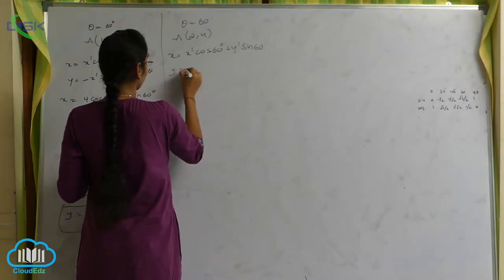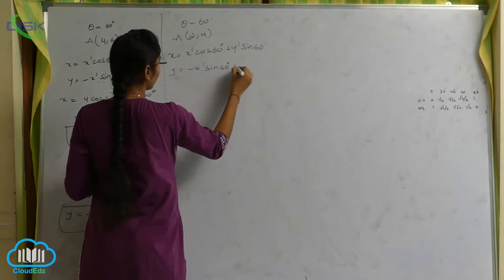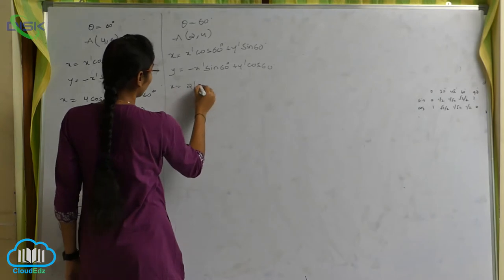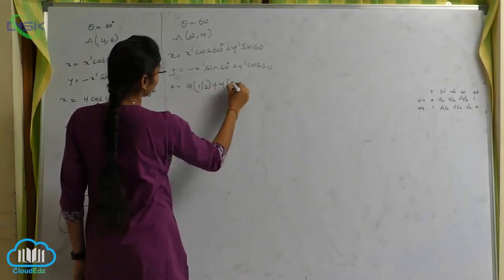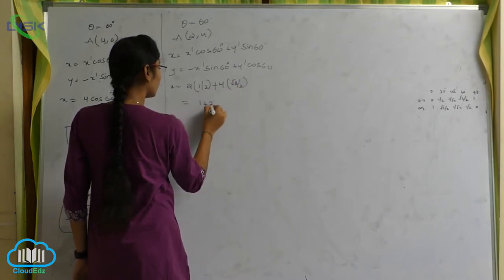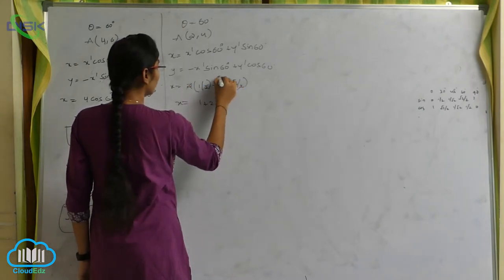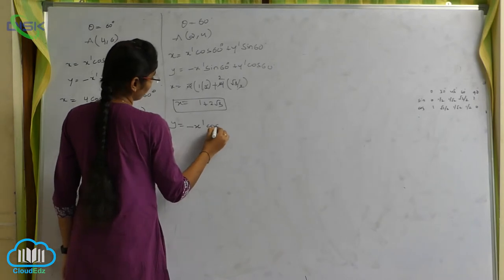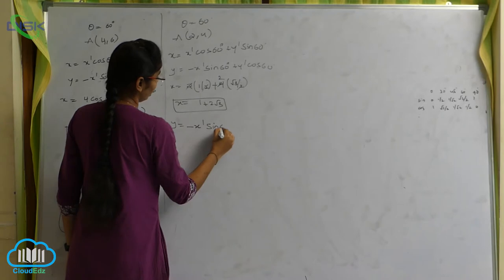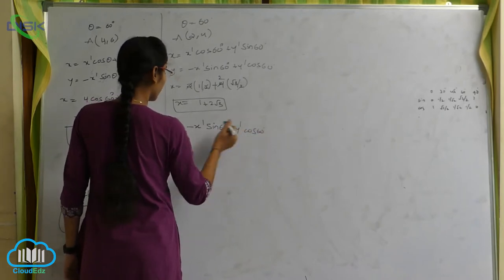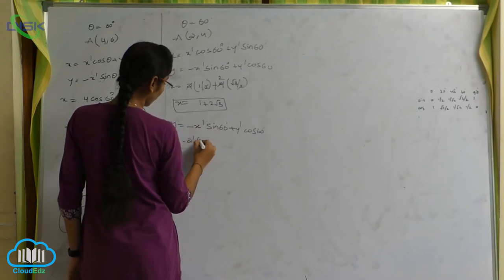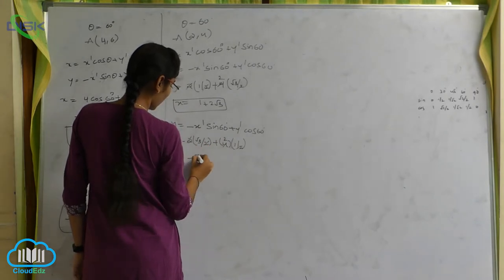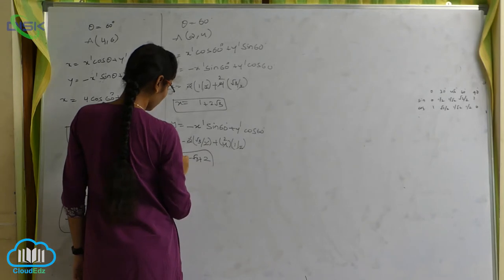y is equals to minus x dash sin 60 plus y dash cos 60. x equals to x dash under 2, cos 60 plus 1 by 2, plus y dash under 4 sin 60. Equals minus x dash cos 60 plus y dash 4 cos 60. So, minus x dash under 2 sin 60 — sin 60 equals root 3 by 2 — plus y dash under 4 into 1 by 2. The 2s cancel. Result: minus root 3 plus 2. y is equals to minus root 3 plus 2.